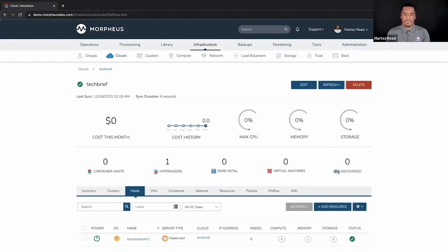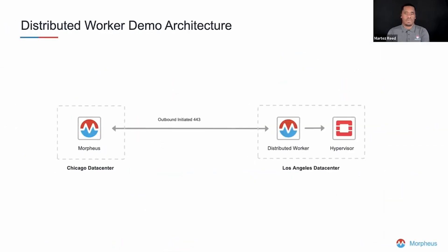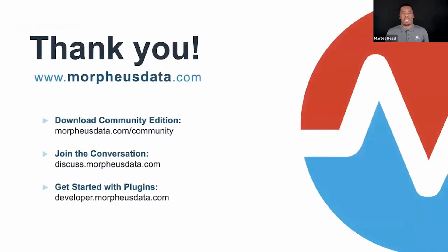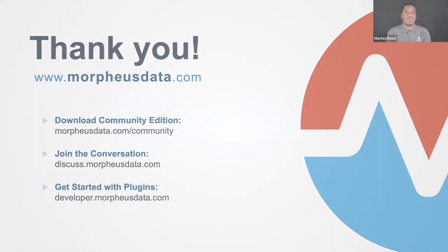That wraps up this Morpheus Tech Brief on the distributed worker. There are a number of ways to interact with Morpheus — download the community edition, interact with the Morpheus community at discuss.morpheusdata.com, and check out plugins being developed at morpheusdata.com. Feel free to reach out to your account team if you're an existing Morpheus customer, or visit morpheusdata.com to learn about ways the distributed worker can provide additional capabilities in your environment. Thank you everyone for joining.